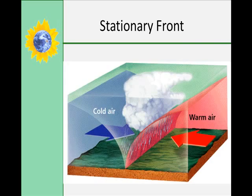When cold and warm air masses meet but neither can move the other, it's called a stationary front. These fronts generally produce weather conditions similar to those of warm fronts — again, long, slow precipitation.